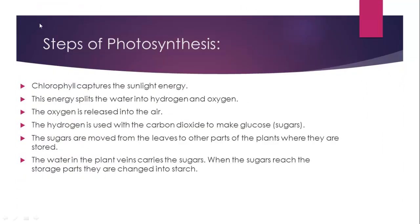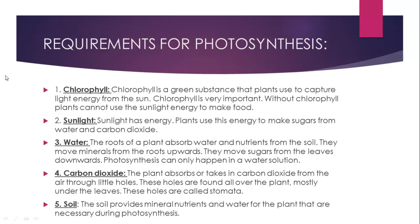This is also another view of photosynthesis which takes place inside the leaves. Now, what are the steps of photosynthesis? Chlorophyll captures the sunlight energy. The energy splits the water into hydrogen and oxygen — water consists of two hydrogen and one oxygen. The oxygen is released into the air, while the hydrogen is used with the carbon dioxide to make glucose. The glucose is transferred to various parts of the plant, and some of it is also stored. The stored sugar is called starch.